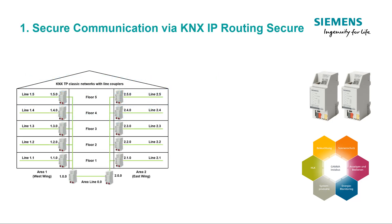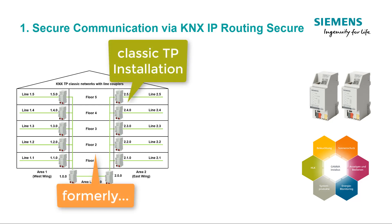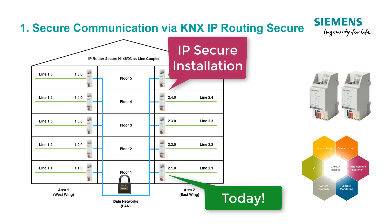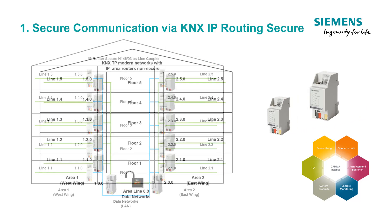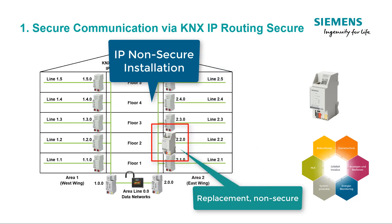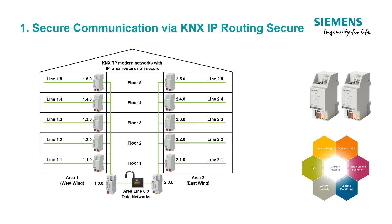Secure Communication via KNX IP Routing Secure. The Siemens KNX IP Secure products use the described procedure KNX IP Secure. Like its predecessors, the IP Router Secure N14603 can be used instead of twisted pair, line or area couplers, and uses the KNX IP Routing Secure method. This secure transmission method can optionally be deactivated in ETS, meaning this product can also be used in existing systems with older, non-secure IP routers as an expansion or replacement device.